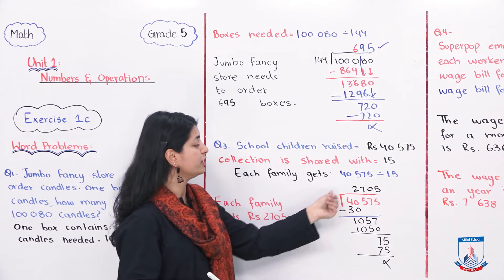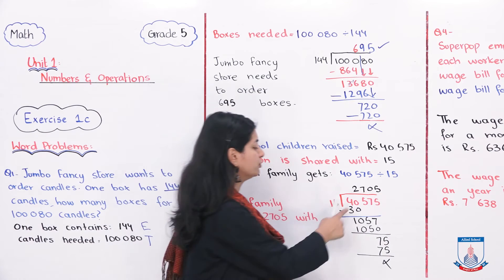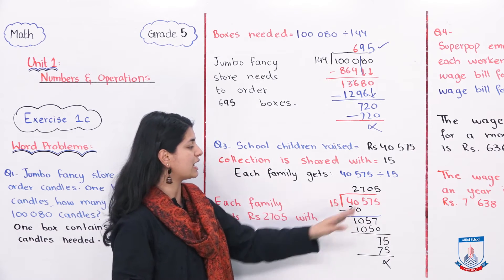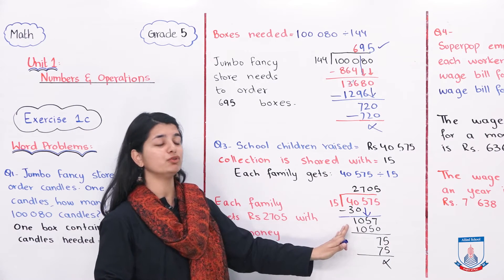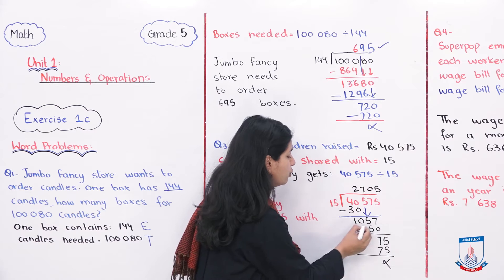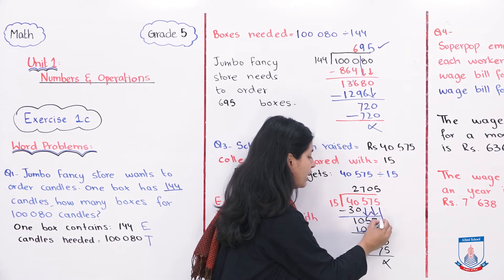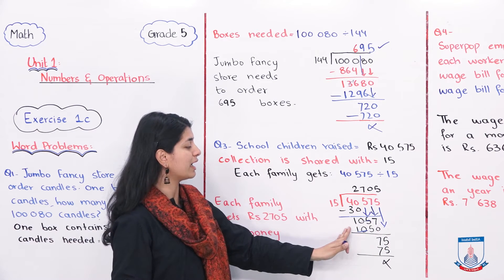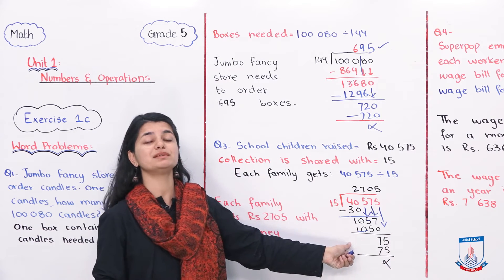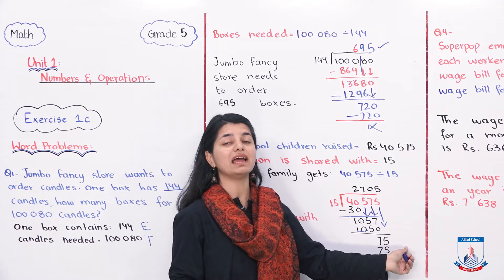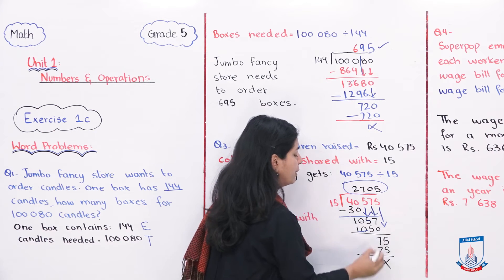We'll solve 40,575 divided by 15. 15 twos are 30; 40 divided by 15 gives 2, and 40 minus 30 is 10. Copy down the 5 to get 105. 15 sevens are 105 — that cancels exactly. Copy down 7, then copy down 5. Working through: 15 into 70 gives partial steps leading to 75 remaining. 15 into 5 is 75 — no remainder. The answer is 2,705.